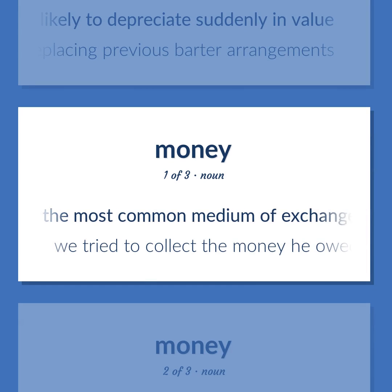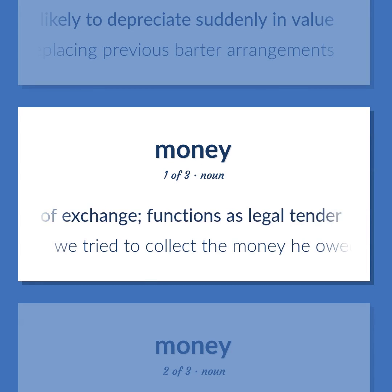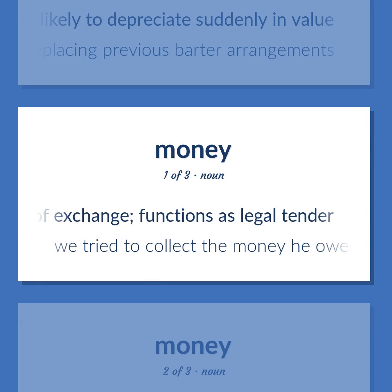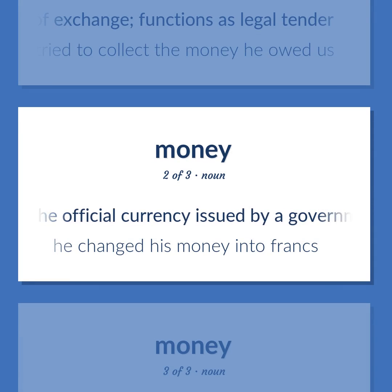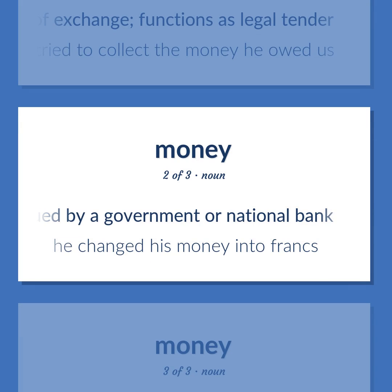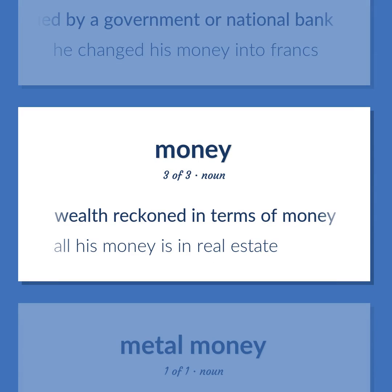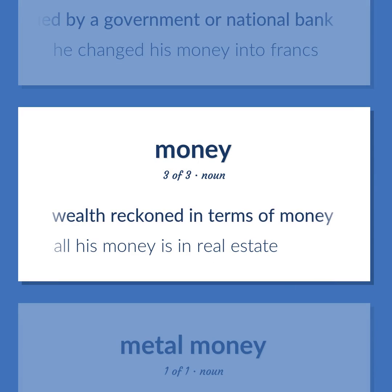The most common medium of exchange; functions as legal tender. We tried to collect the money he owed us. The official currency issued by a government or national bank. He changed his money into francs. Wealth reckoned in terms of money. All his money is in real estate.